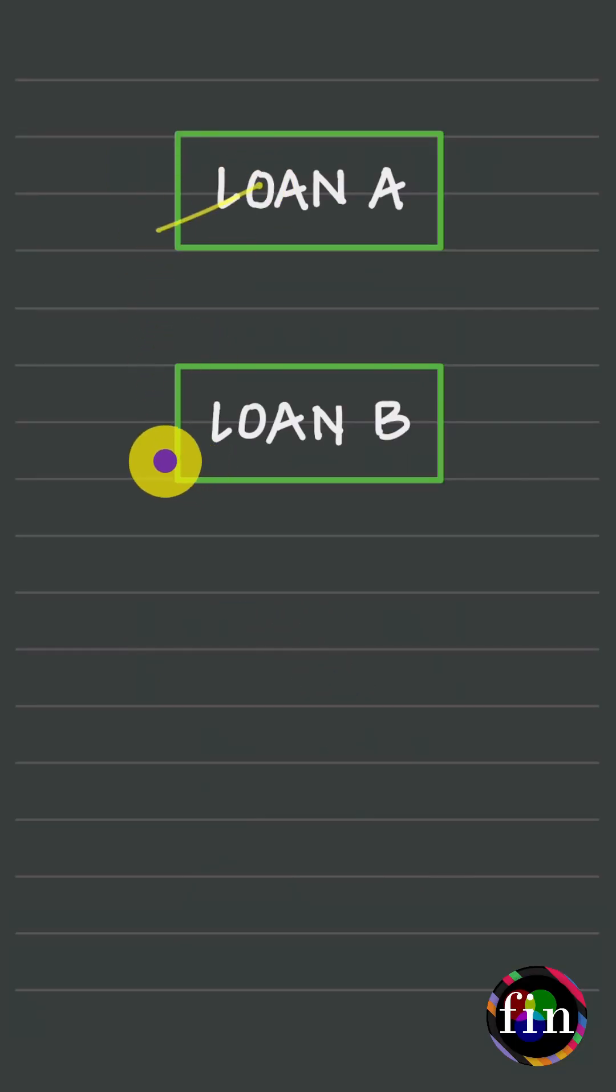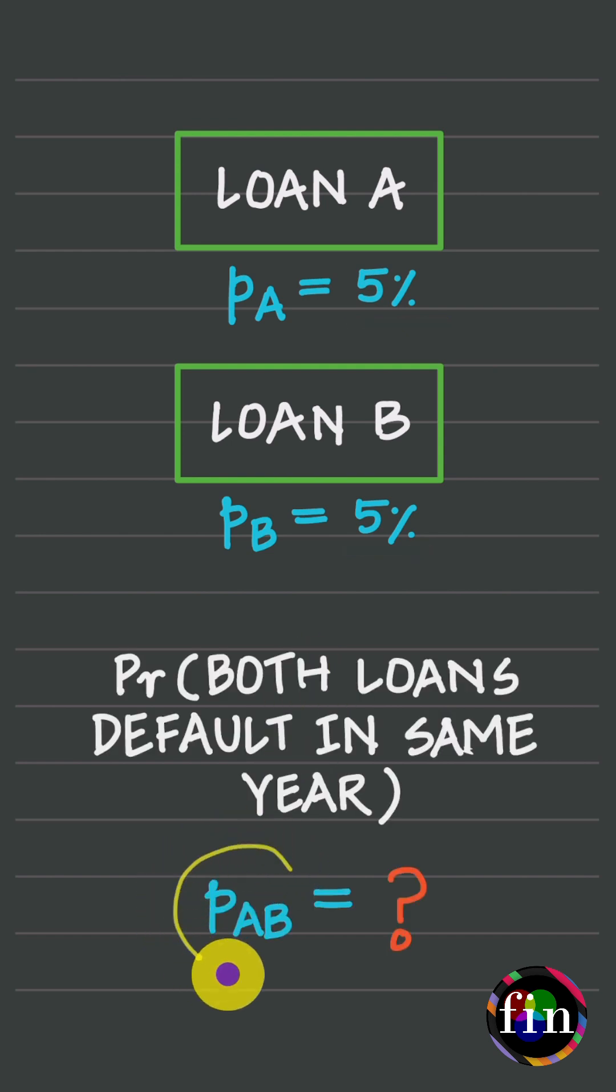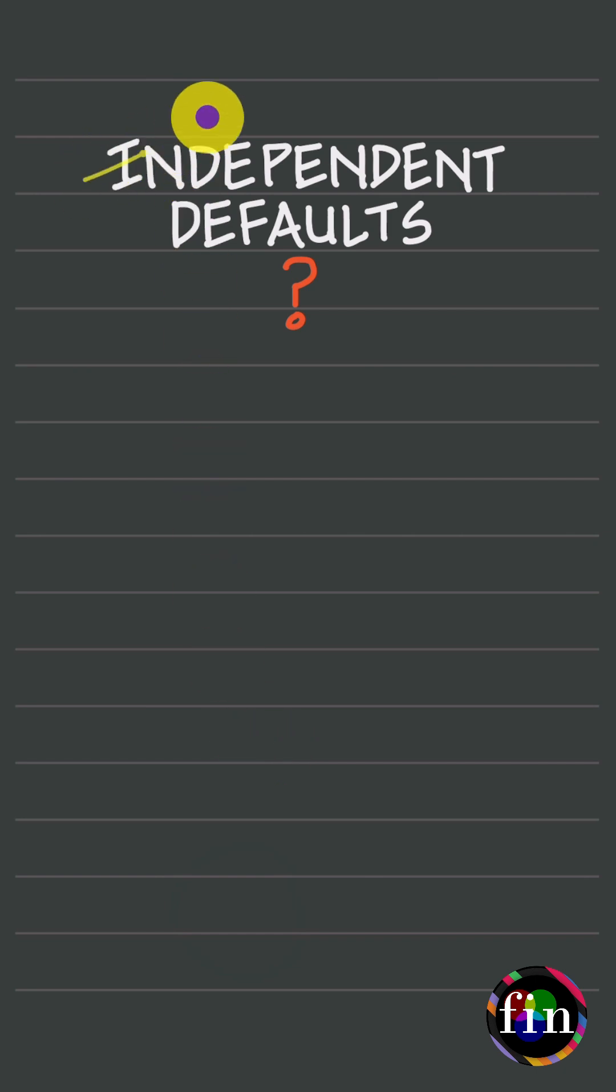If I were to give you two loans A and B both having the same probability of default, then to calculate the joint probability of default, a simple starting point is to assume that defaults are independent.